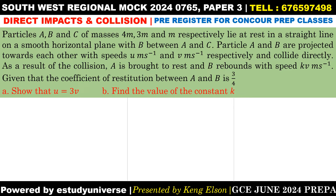Let's begin with questions (a) and (b). The problem states: particles A, B, and C of masses 4m, 3m, and m respectively lie at rest in a straight line on a smooth horizontal plane, with B between A and C. Particles A and B are projected towards each other with speeds u m/s and v m/s respectively and collide directly. As a result, A is brought to rest and B rebounds with speed kv m/s. Given the coefficient of restitution between A and B is 3/4, (a) show that u = 3v and (b) find the value of the constant k.